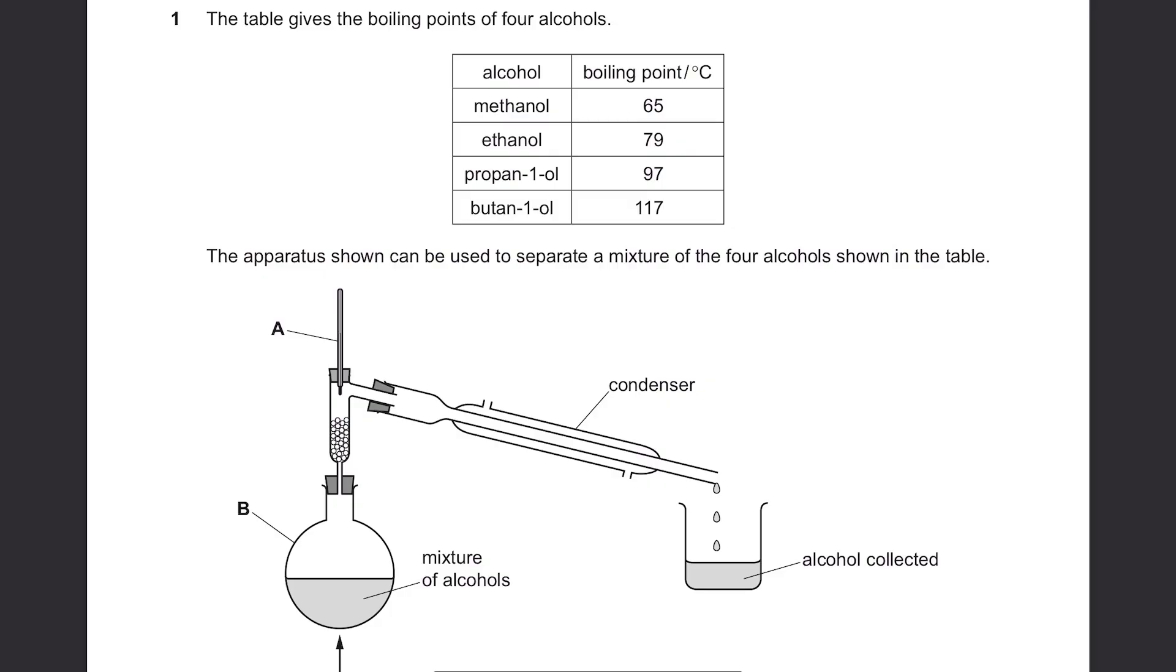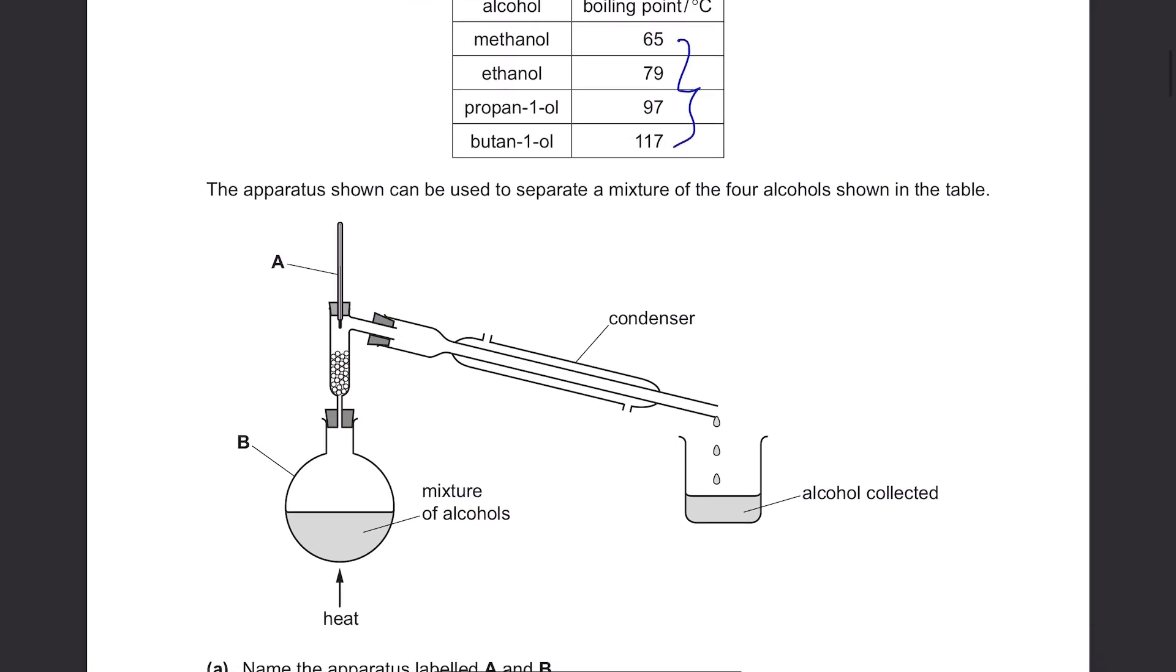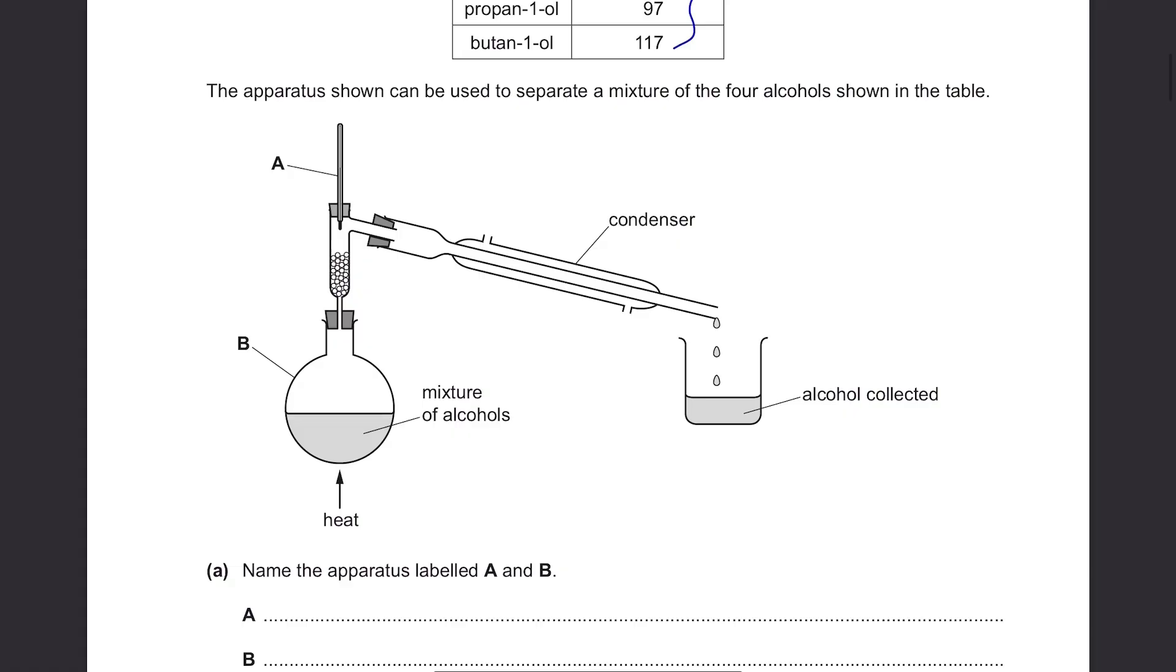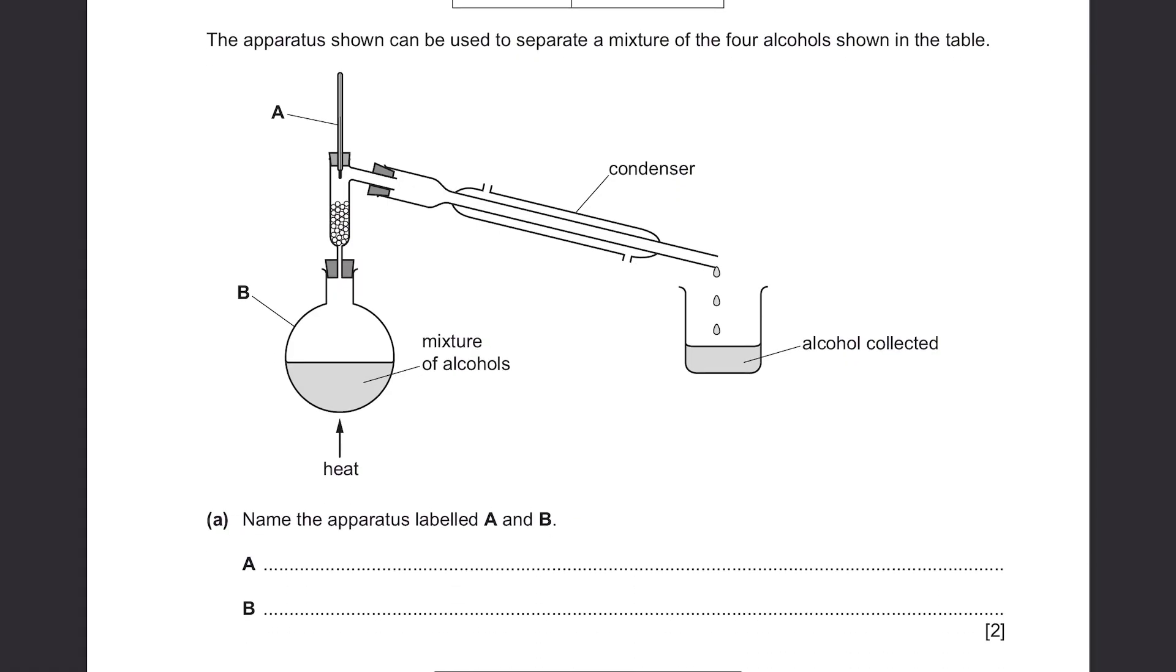The table gives the boiling points of 4 alcohols. We see 4 different boiling points here. The apparatus shown can be used to separate the mixture of the 4 alcohols shown in the table. Looks like a setup for fractional distillation. Part A, name the apparatus labelled A and B.